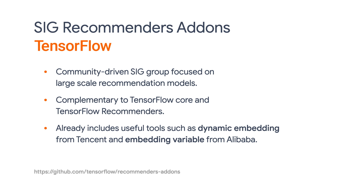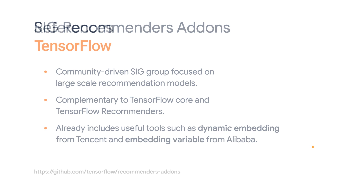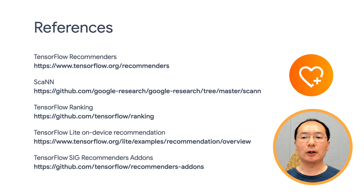So just to summarize: in today's video, we discussed what a recommendation system is and why it's important. We also talked about how modern recommendation systems are structured and why it's hard to build an effective one. Lastly, we introduced several products open sourced by Google to help you build your own recommendation systems. If you are building a recommender today, we highly recommend you start with TensorFlow Recommenders, which can leverage ScaNN and TensorFlow Ranking as well. In our next video, we'll be introducing two traditional machine learning methods to build recommendation systems: content-based filtering and collaborative filtering. See you next time.